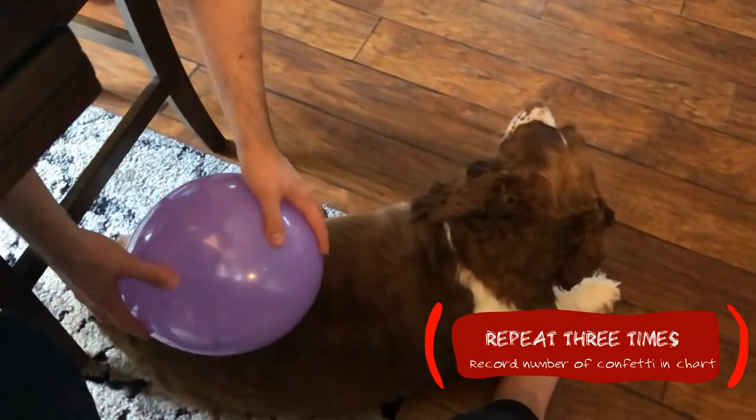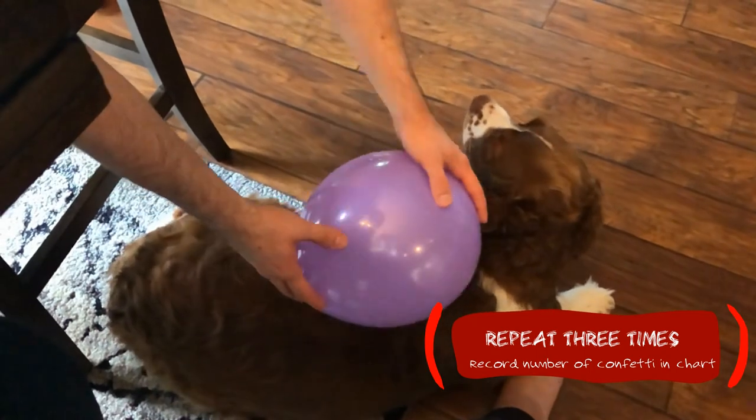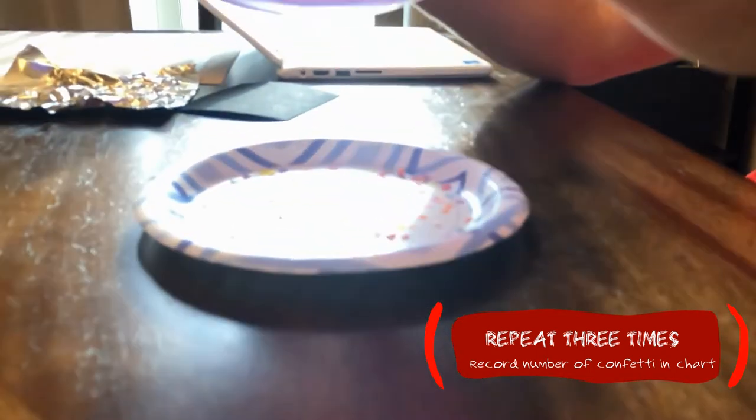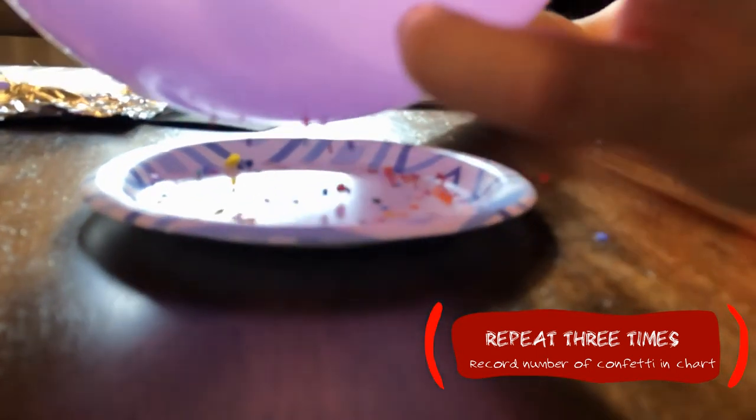For my fifth item I chose my dog's fur, and he seemed to volunteer okay. And it seems like - you can kind of see from this picture - that the confetti jumps even more strongly to the balloon than it did with my hair.